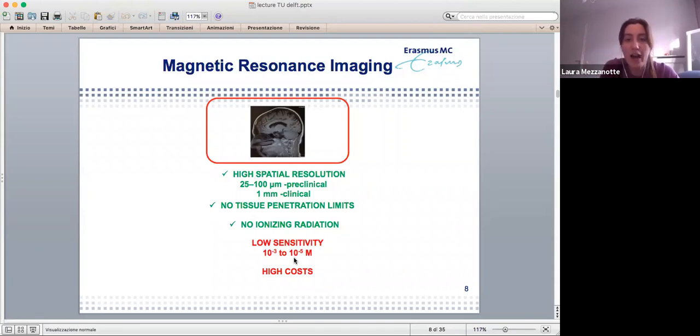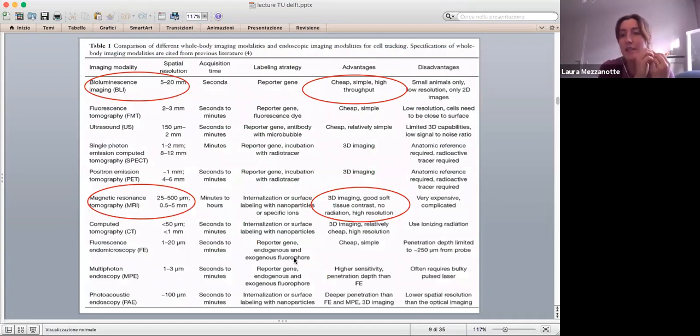So what are the advantages of MRI is that you have a high spatial resolution. In preclinical, we can go down to 100 micromolar. In clinically, mostly it's one millimolar. You don't have tissue penetration limits because it's not like light that is absorbed and scattered. You don't use ionizing radiation. The downside is that most of the imaging contrast agents have low sensitivity.